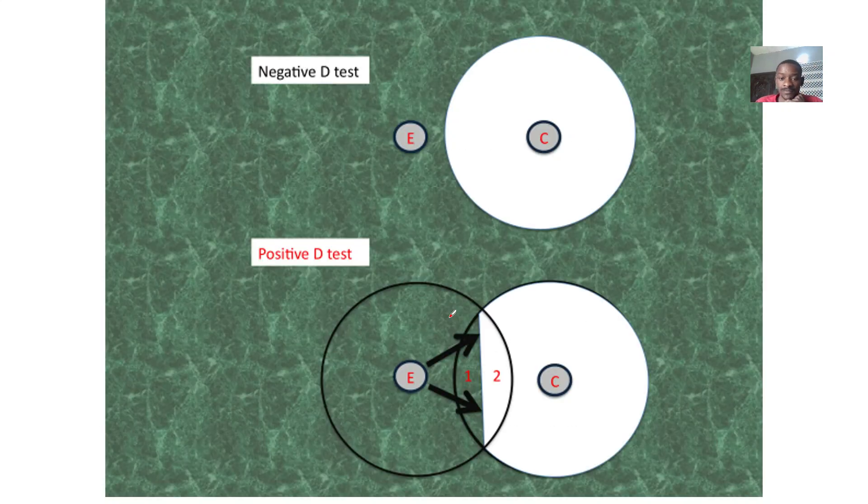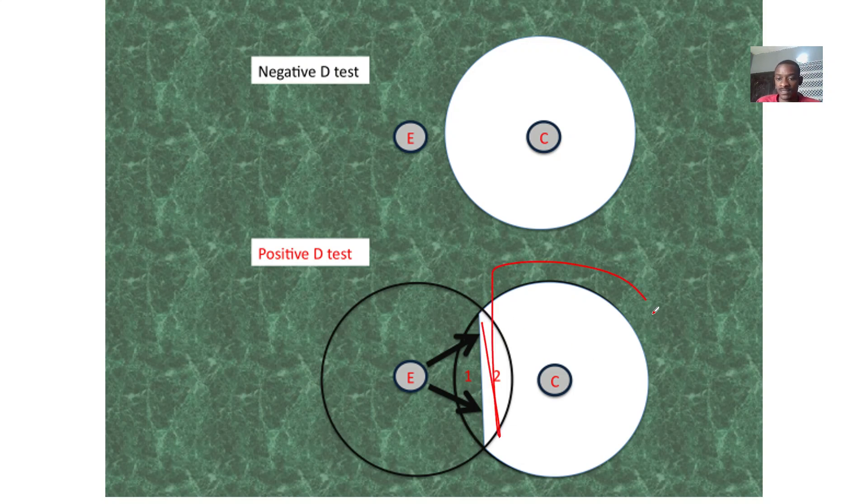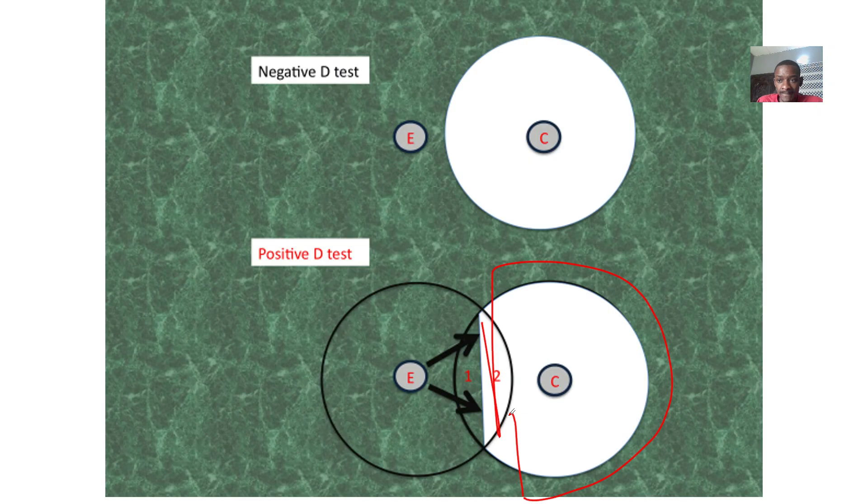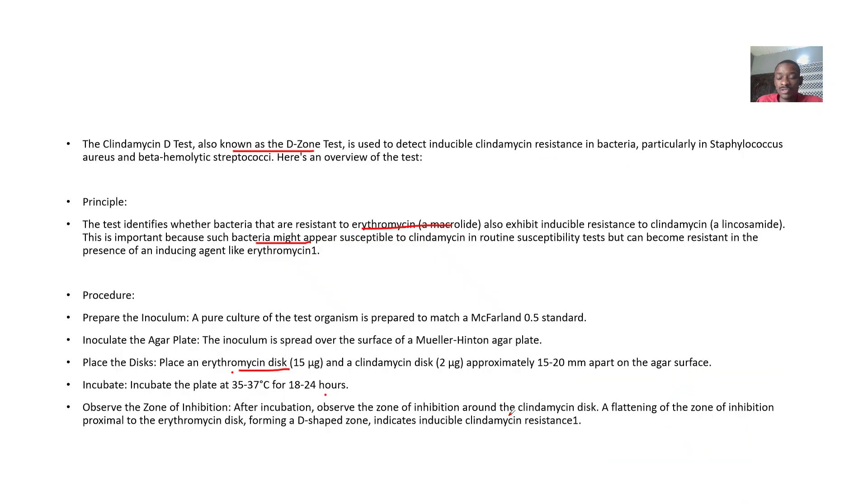You can see this—it is positive, showing like a D around the clindamycin. It's kind of like a D around the clindamycin, meaning you shouldn't use it.